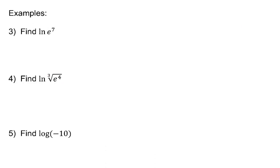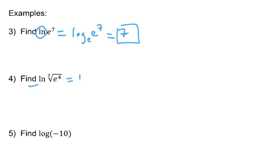Let's do some natural logarithms — very much the same idea. When you see the natural logarithm, remember that LN means log base e. So ln(e^7) is log base e of e to the 7, and by the inverse relationship, that's just 7. This next one looks hard, but if you remember that radicals can be written as fraction exponents, you can rewrite it as the natural log of e to the 4/3 power — the 4 represents the exponent and the 3 represents the root. Logarithm base e of e to the 4/3, by the same inverse relationship, is 4/3.